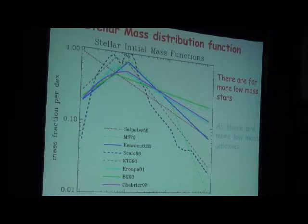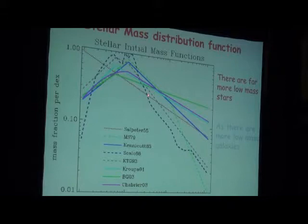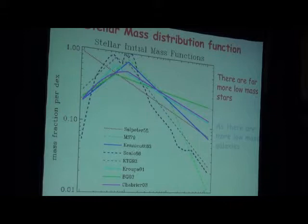Salpeter only measured down to one solar mass and extrapolated below, which was not correct. Later work by Kroupa and especially Chabrier consistently found a knee — the IMF is actually a double power-law slope — and there are not as many low-mass stars as predicted by the Salpeter extrapolation. This is considered the Milky Way type mass function.